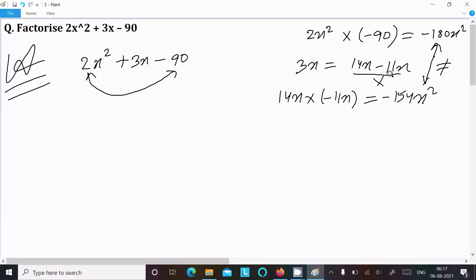Now compare this: -180x² and -154x². Both are not the same, so we cannot take this one. If they're the same, then we can take it.